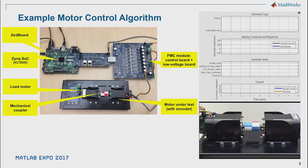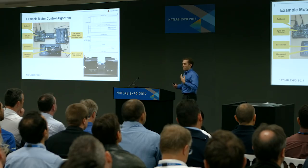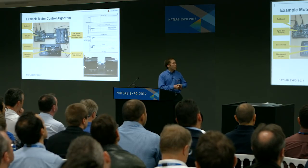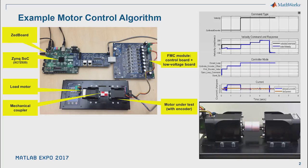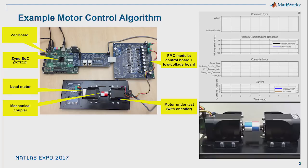I want to illustrate this workflow using an example we built in-house at MathWorks. The setup we had was a development board with an FPGA and a microprocessor, an interface board for talking to the motor, mechanically coupled to another motor acting as a dyno, and an encoder cable for accurate position measurement feeding back into the control algorithm. On the right-hand side, the top shows simulation results of a closed-loop velocity test in Simulink; underneath is the same test carried out on real physical hardware using algorithms deployed through code generation.